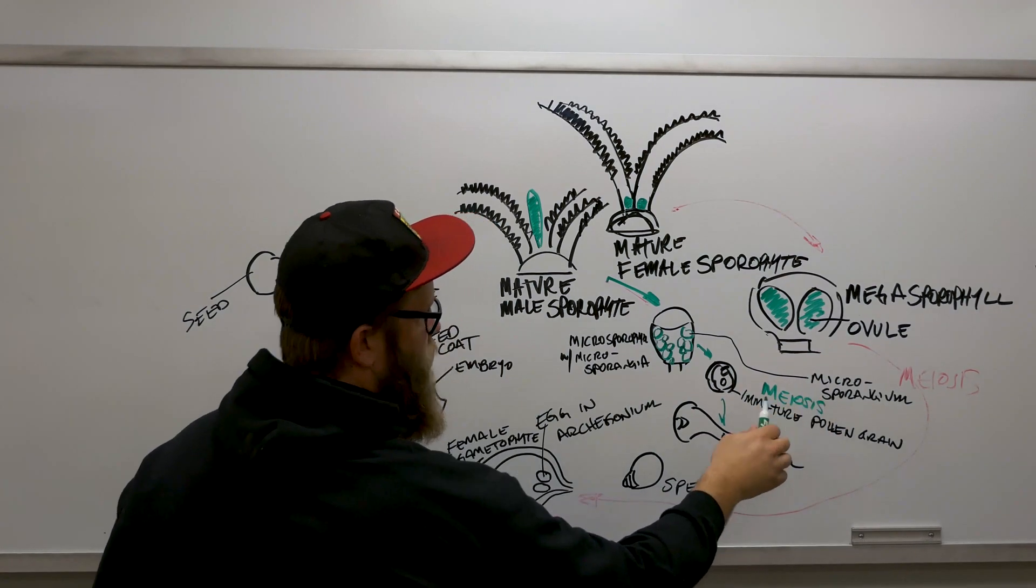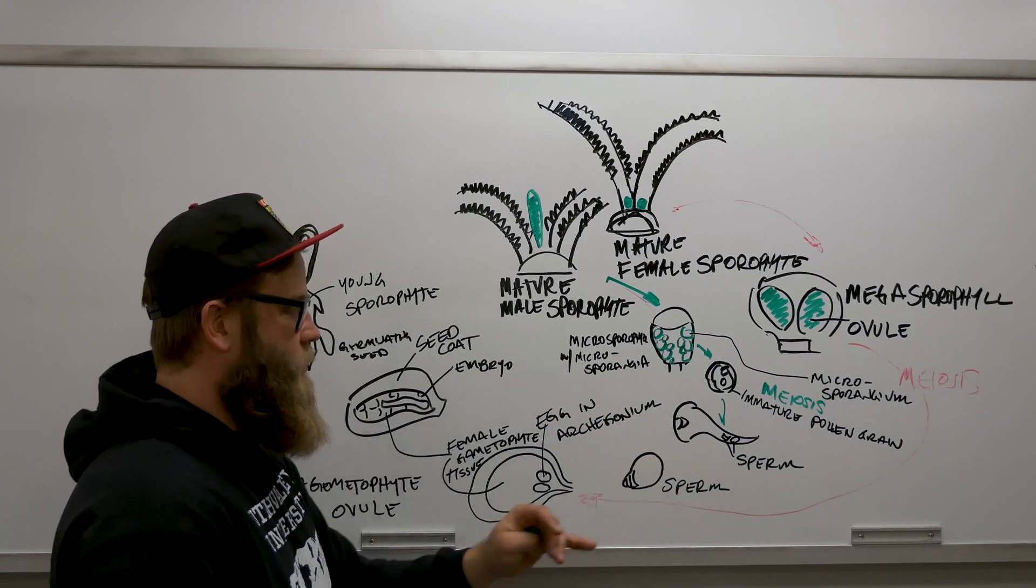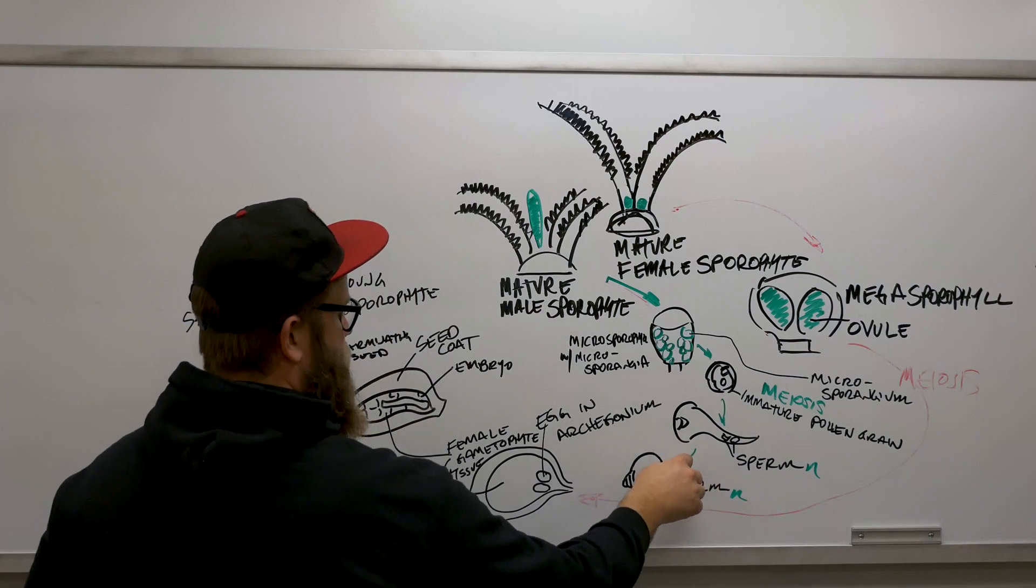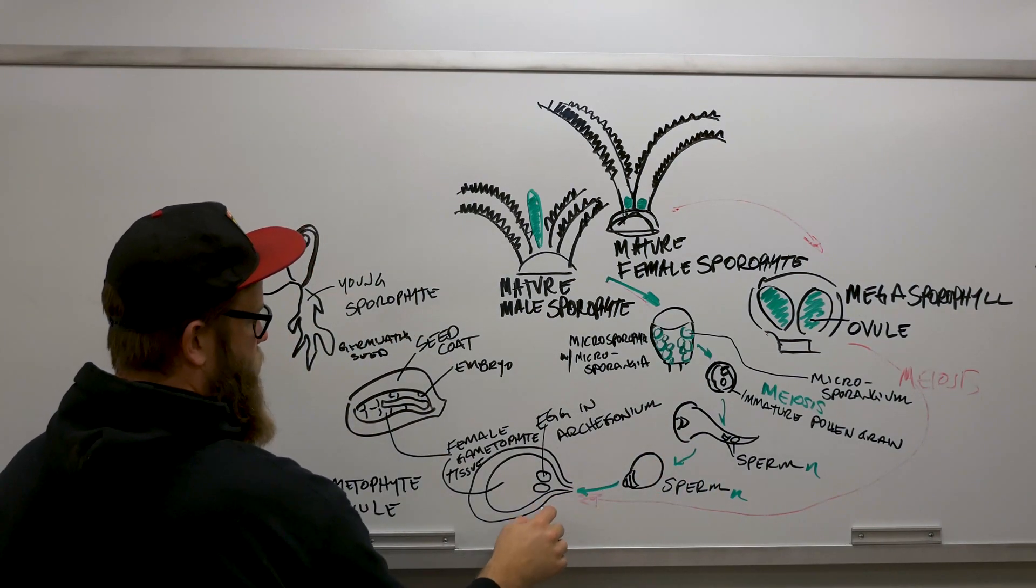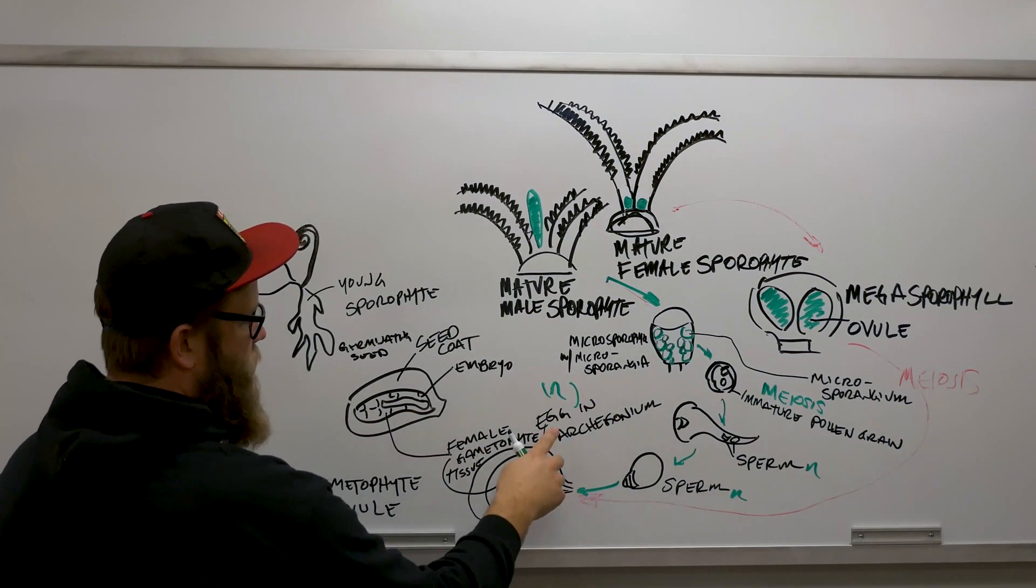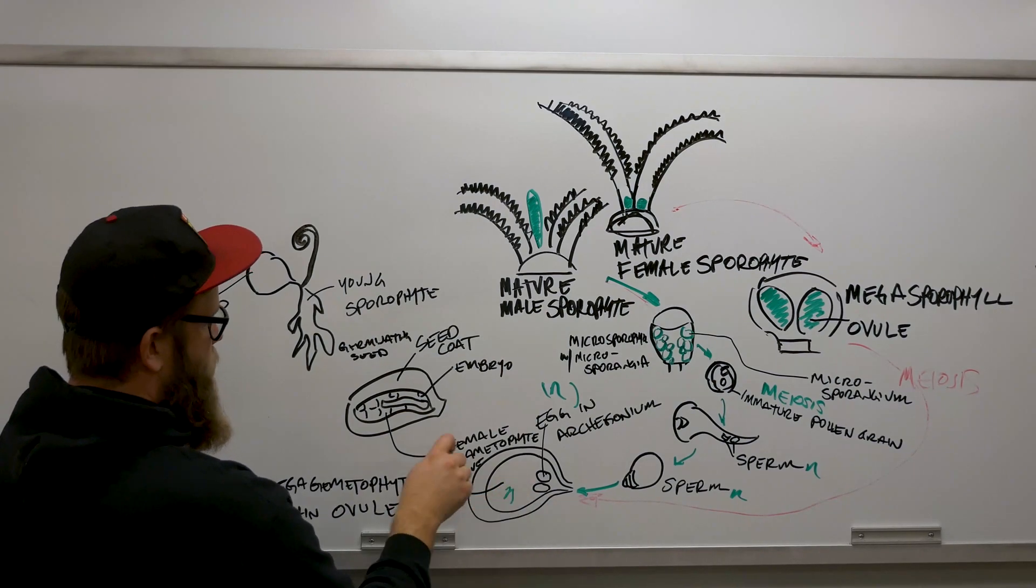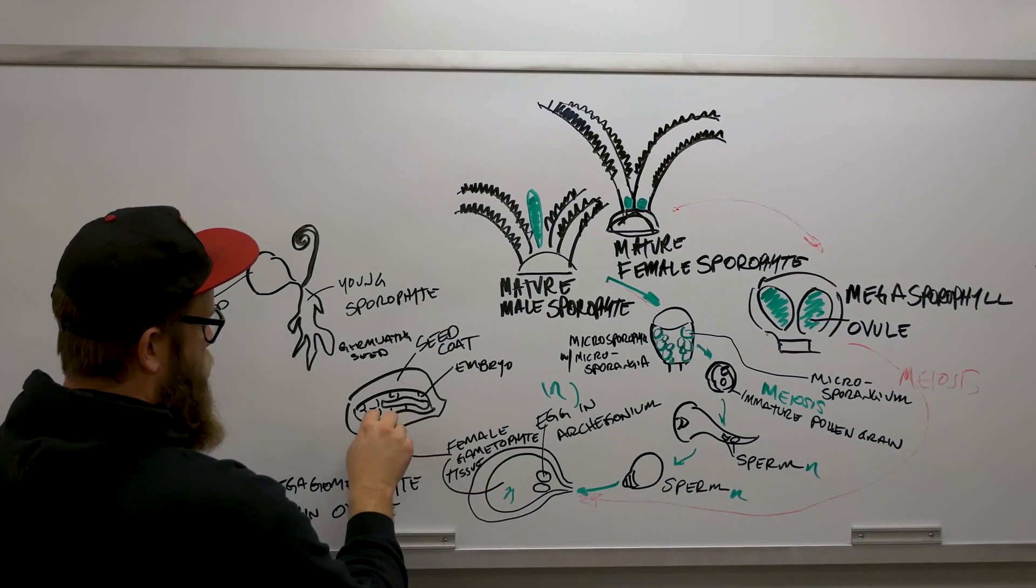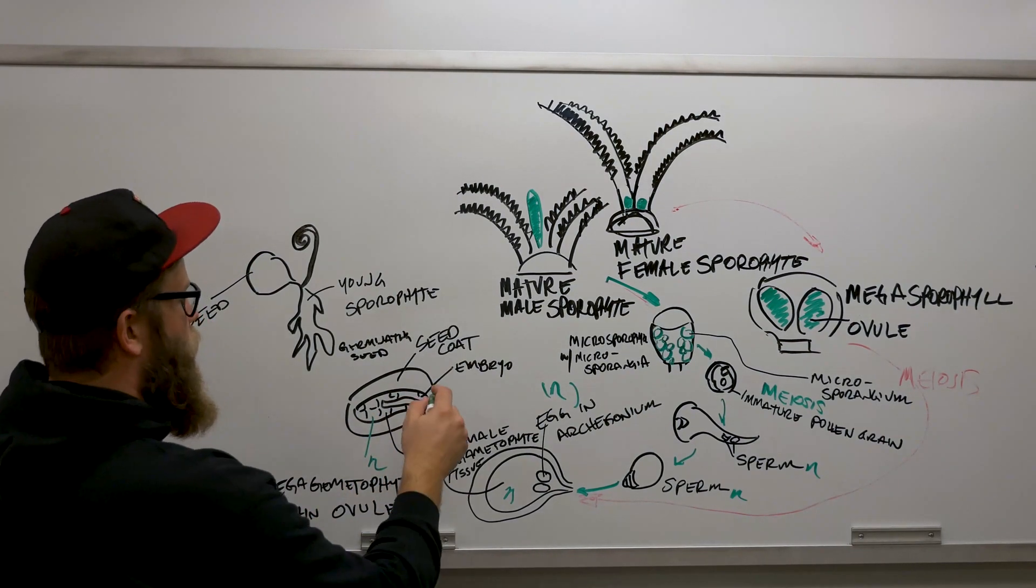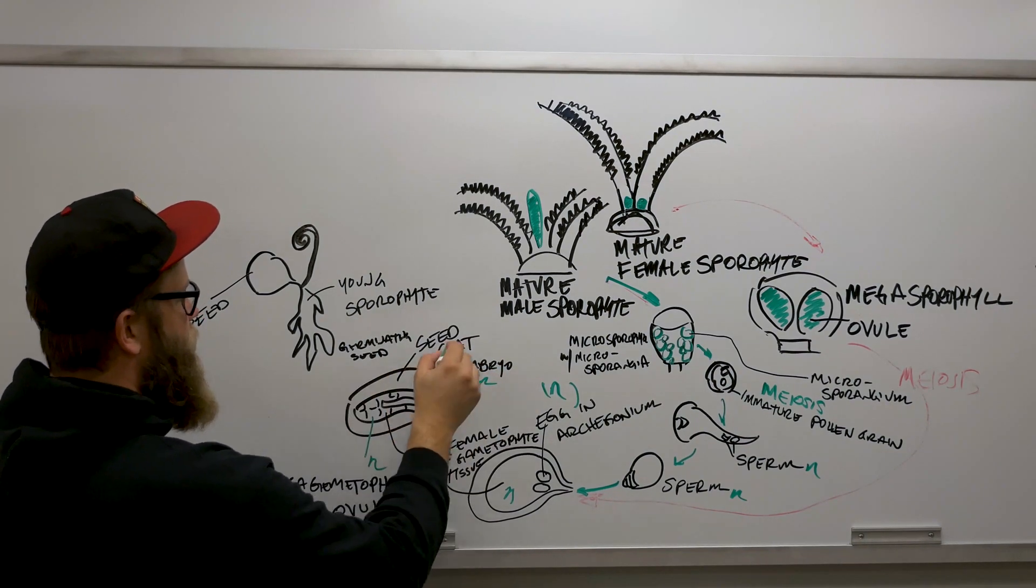Meiosis occurs here and we've got our sperm, and those sperm are going to fertilize this egg which is inside this archegonium. This tissue here is n, and also right here this tissue is n. This female gametophyte tissue, whereas now we have a fertilized embryo that's 2n.